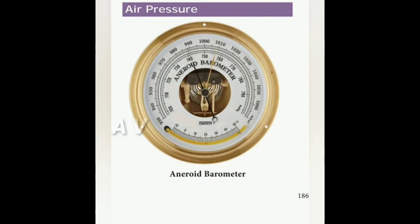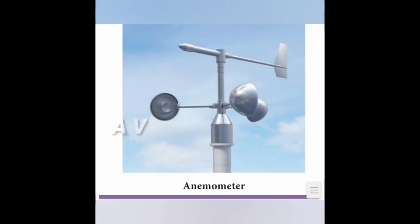Wind speed is measured by an anemometer. A wind rose is a diagram used to depict the direction and periods of prevailing winds on a map. A meteorograph, also called a triple register, is an instrument that records wind speed, direction, and sunshine, and provides a graphic representation.